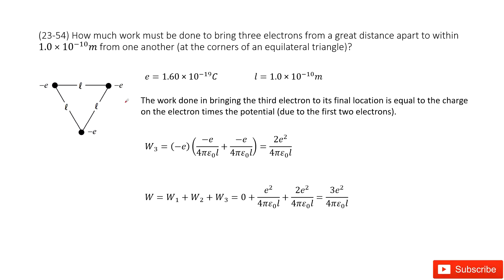Next we need to put charge three at another corner. If we put charge three at this corner, we need to consider the potential due to charge one and potential due to charge two. So that means we use charge three, negative e, times the potential from charge one and potential from charge two, and get the answer there.